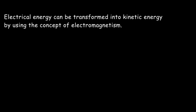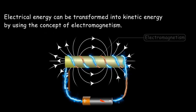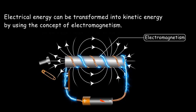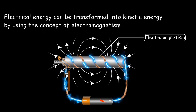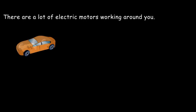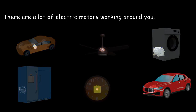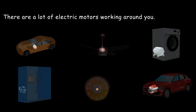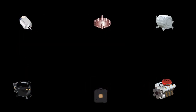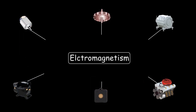Electrical energy can be transformed into kinetic energy by using the concept of electromagnetism. Have you ever noticed that there are a lot of electric motors working around you? For instance, we have motors in some toys, fans, washing machines, refrigerators, clocks, and vehicles. Everywhere we have electric motors. All those small motors work on the concept of electromagnetism.